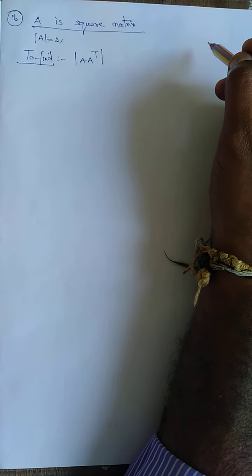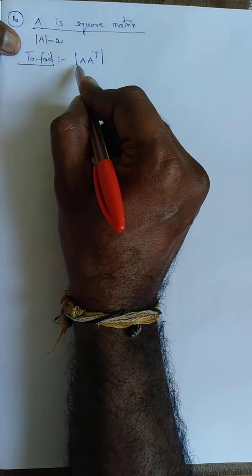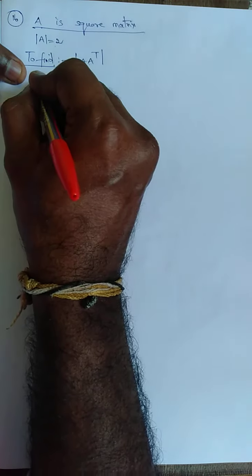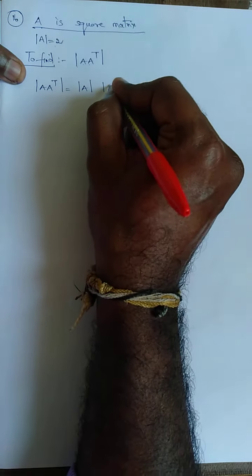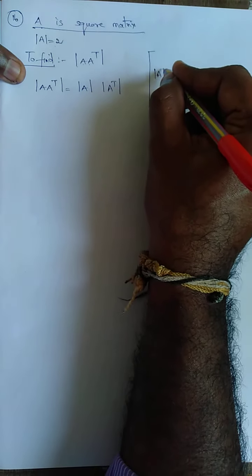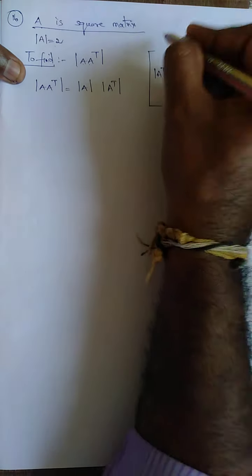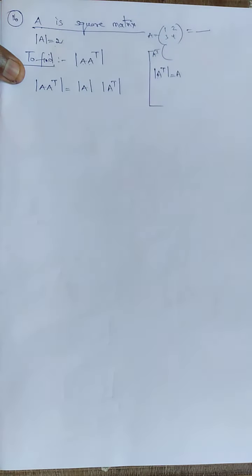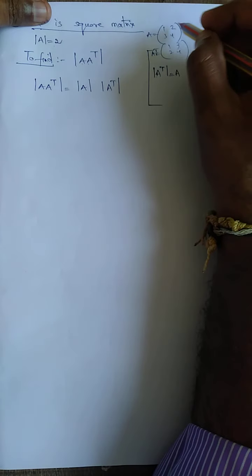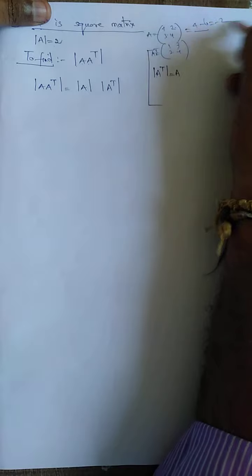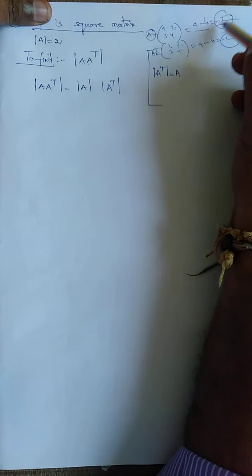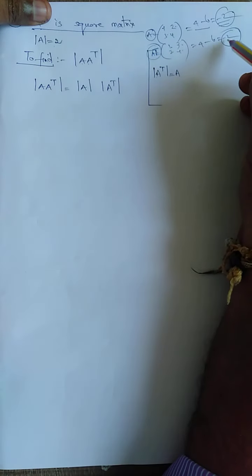16th sum: A is a square matrix — 2×2, 3×3, or 4×4 — and determinant of A is given. I need to find the determinant of A·Aᵀ. There is a formula: det(Aᵀ) = det(A). For example, take A = [1,2;3,4]. Finding det(A): 4×1 minus 2×3 = 4 minus 6 = minus 2. Finding det(Aᵀ): transpose is [1,3;2,4], so 4×1 minus 3×2 = minus 2. Same answer.